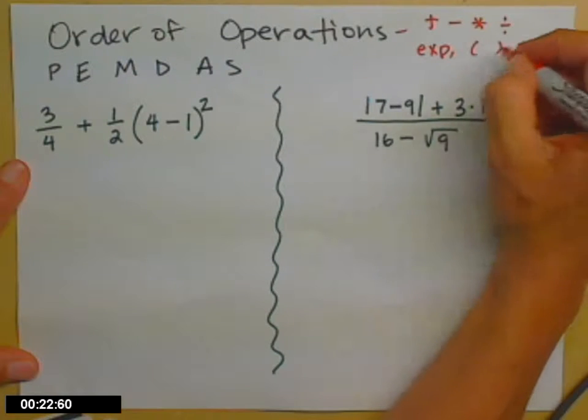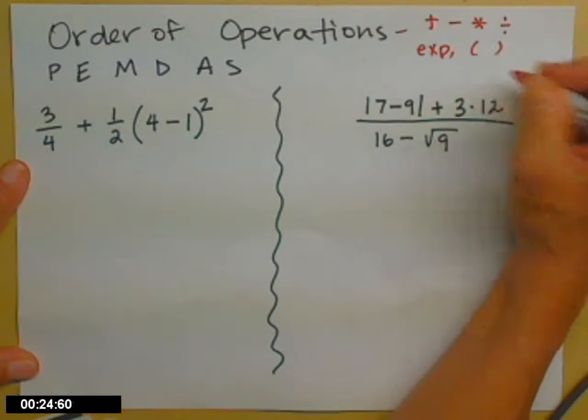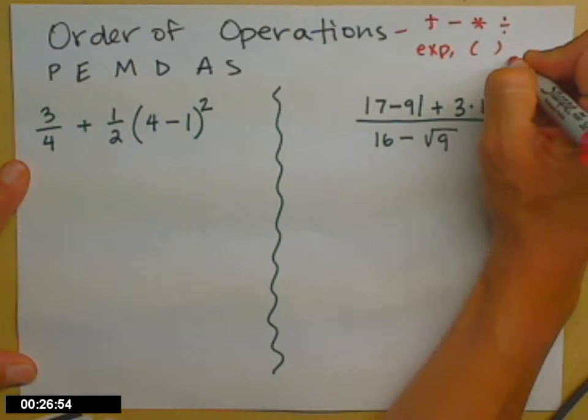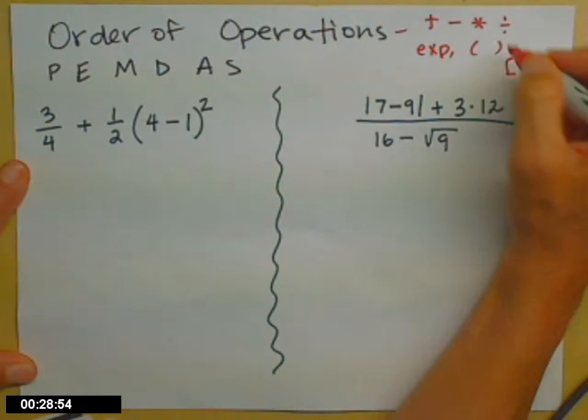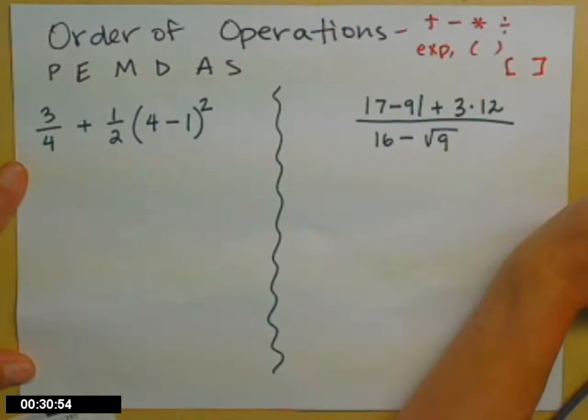And by the way, books can use different things for parentheses. Sometimes they'll be the standard ones we know about. Other times they'll use the square brackets. They mean the exact same thing for us in math for now.